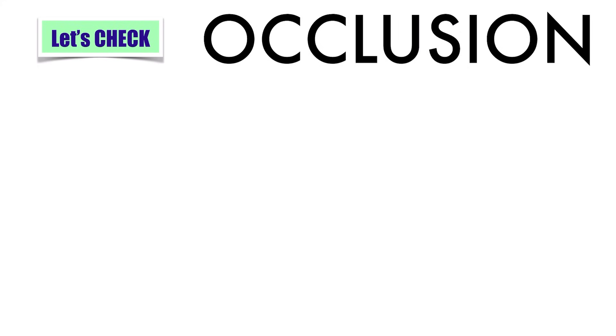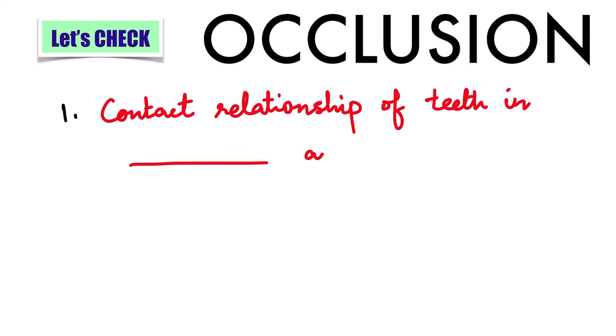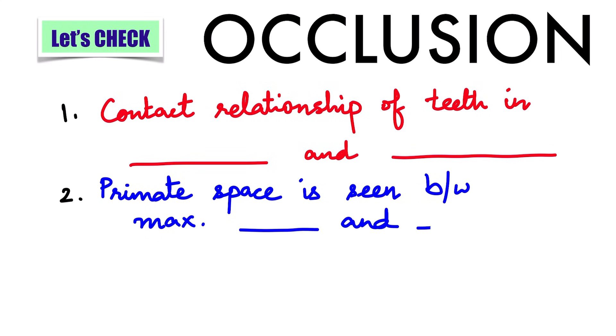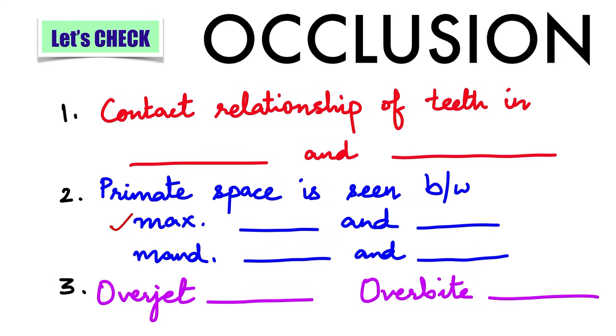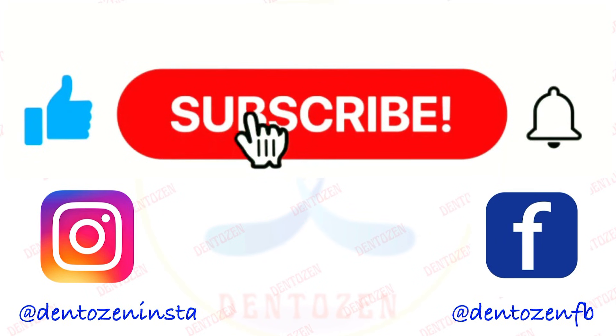Let's check what you have learned: What is occlusion? Occlusion is the contact relationship of teeth in function or para-function. Where are primate spaces seen — in the maxilla and in the mandible? What is overjet and what is overbite? Mixed dentition and permanent dentition occlusion will be discussed in part two, so don't forget to watch that video.